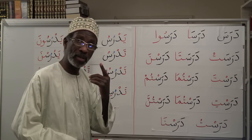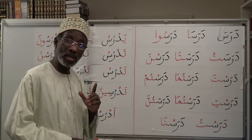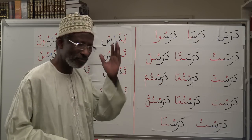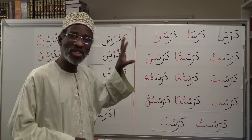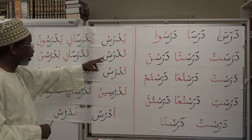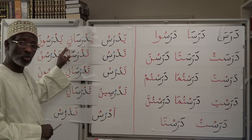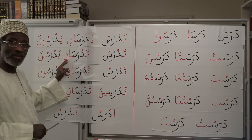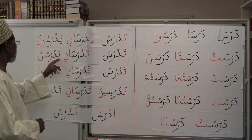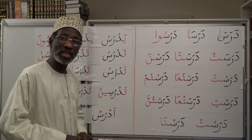So to remember the prefixes: male third person is ya-ya-ya, and female is ta-ta-ya. Yedrusu — he studies or is studying. Tedrusu — she is studying. Yedrusani — they two men are studying. Tedrusani — they two women are studying. Yedrusuuna — they three men or more are studying. Tedrusna — they three women or more are studying.